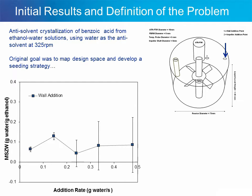One of the things that became apparent very early in the characterization of this process was the influence of the addition rate of anti-solvent on the metastable zone width. Typically, what one would expect for a classical crystallization is that as the addition rate increases and the rate of supersaturation generation increases, the metastable zone width would get wider — but for this system we actually did not see that occurring.